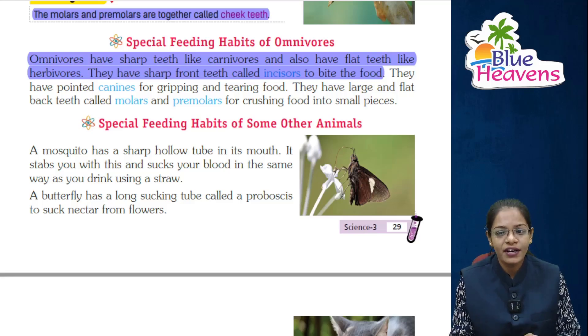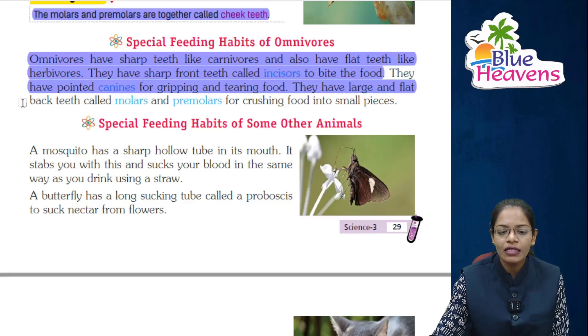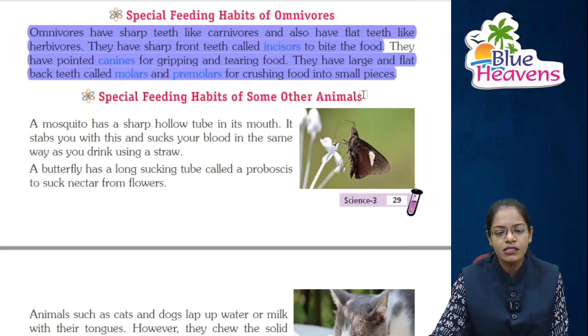They have pointed canines for gripping and tearing food. They have large and flat back teeth called molars and premolars for crushing food into small pieces.